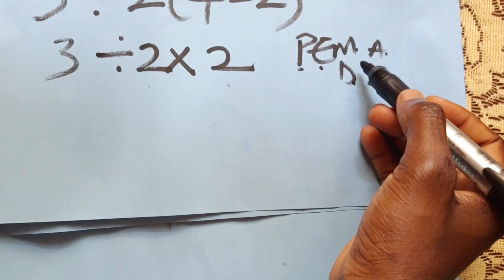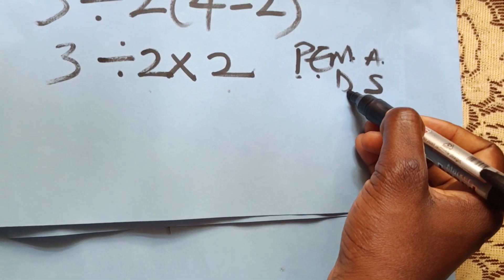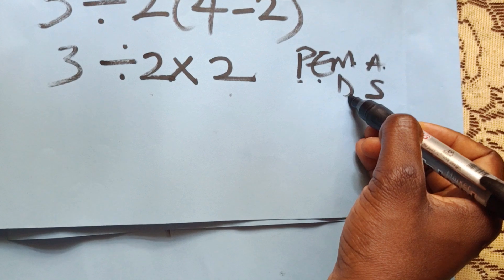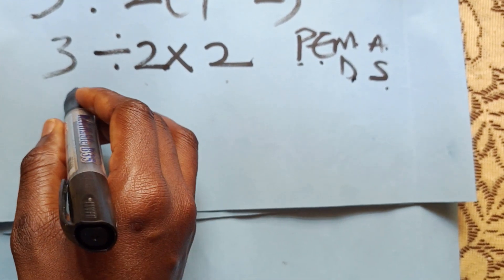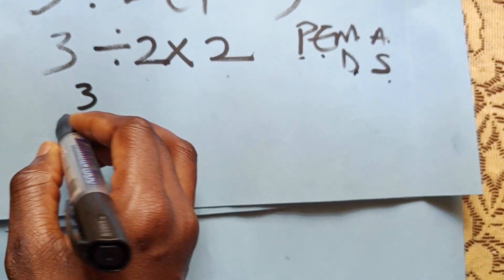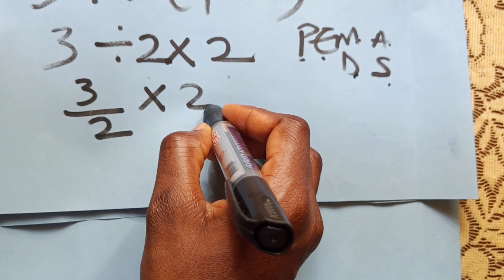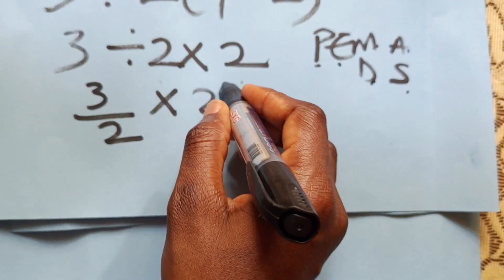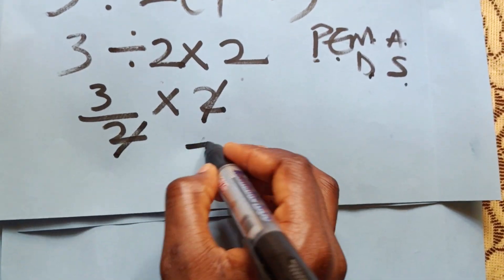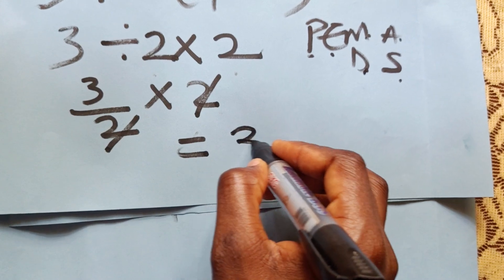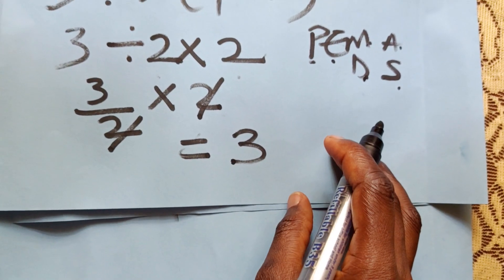With PEMDAS, multiplication and division have equal priority, so from left to right we solve this first: three over two, then times two. These two cancel, and our final answer is three. Thanks for watching.